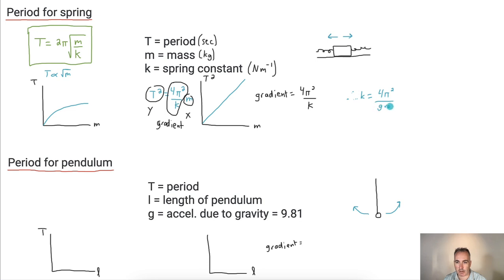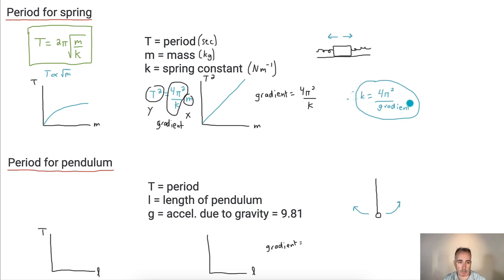So this is quite powerful. By graphing T squared versus m, you can actually determine the spring constant from the gradient. We have a similar equation and treatment for a pendulum. The equation is T equals two pi times the square root of L over g, where L is the length of the pendulum.